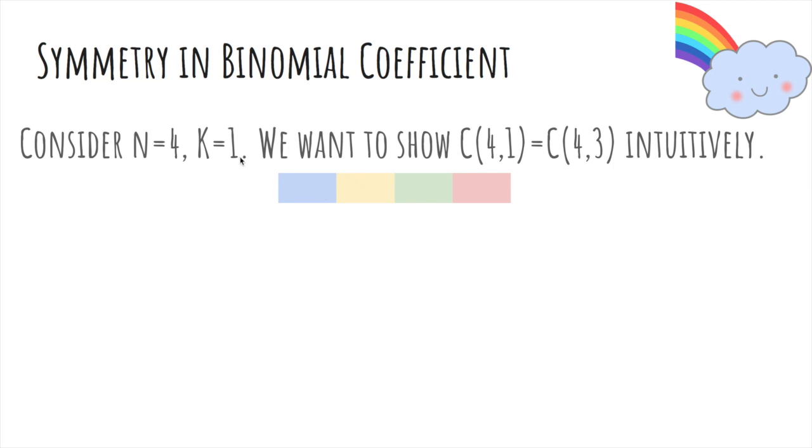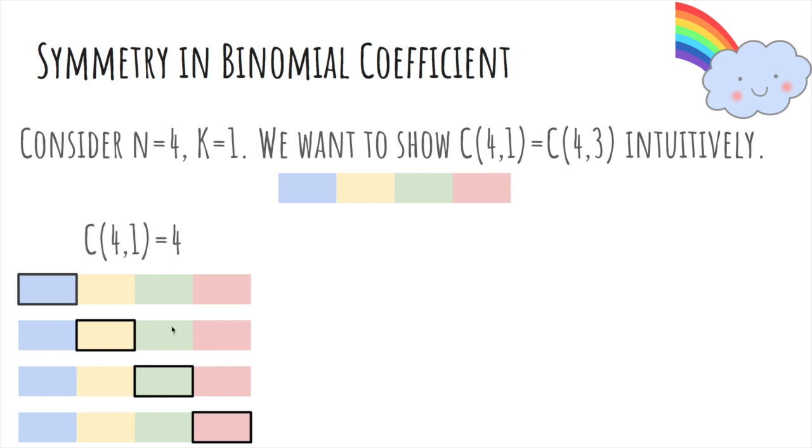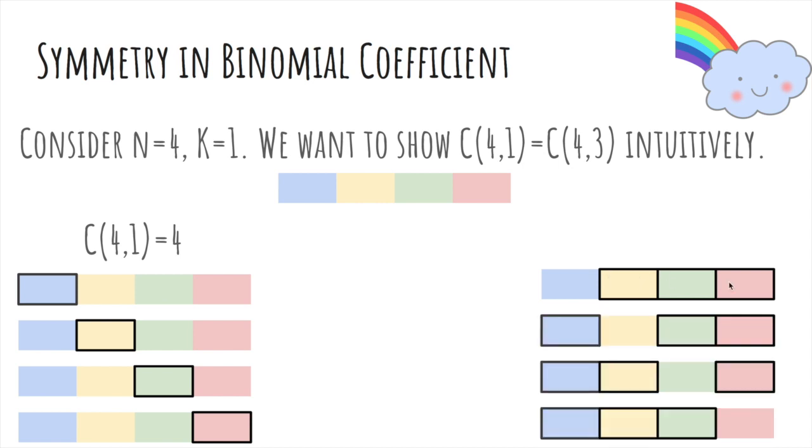Well, let's say we have n equals 4 and k equals 1, and I'm going to show that 4 choose 1 and 4 choose 3 are the same. So here are the ways to choose one color out of 4, and there's four ways to do so. Now here are the ways to choose three colors out of 4. Well, you can choose yellow, green, and red, blue, green, and red, blue, yellow, and red, and blue, yellow, and green. And so this is 4 choose 3, which is 4. And so the way to think about it is that if I want to choose three colors, it's the same as choosing which one color I don't want and taking everything else. And so you'll notice that these are complementary rows.